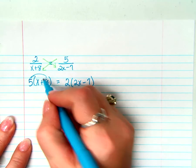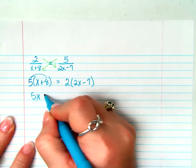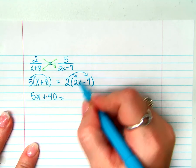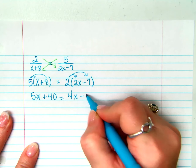So we just distribute here and here. We get 5x plus 40 equals, again, distribute here and here, 4x minus 14.